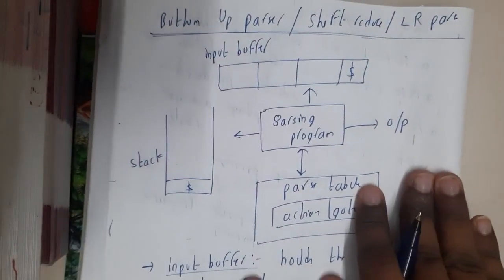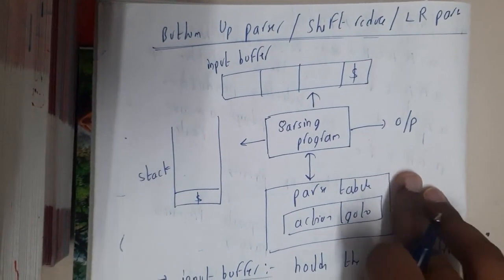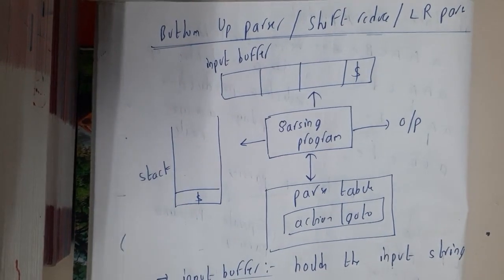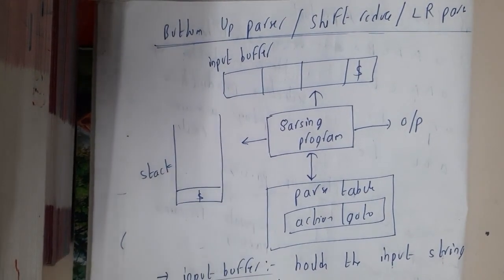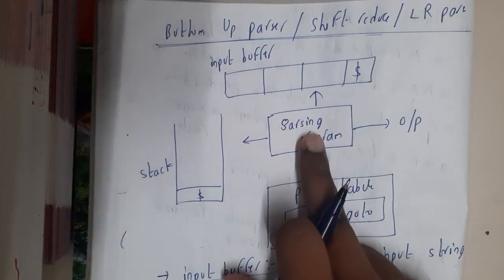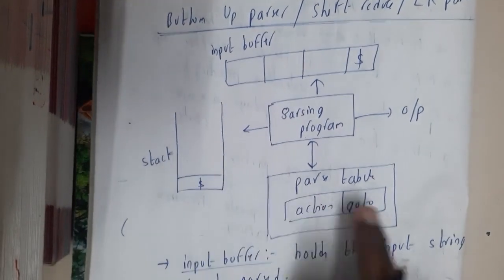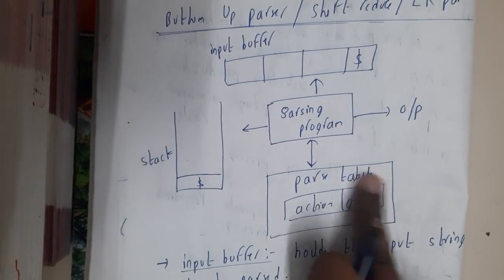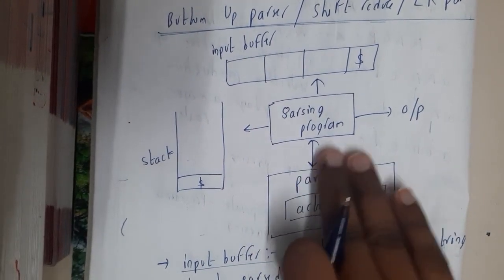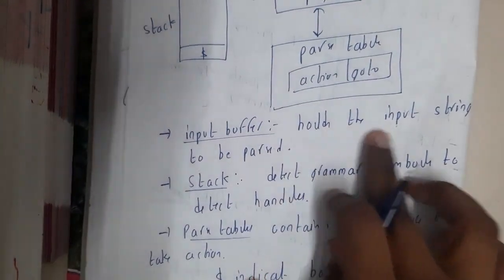A bottom-up parser is also called a shift-reduce parser or LR parser. The block diagram is the same as for the LL parser. It contains a parsing program, an input buffer, a stack, and a parsing table. Using the parsing table's action and go-to parts, we evaluate and get the output.